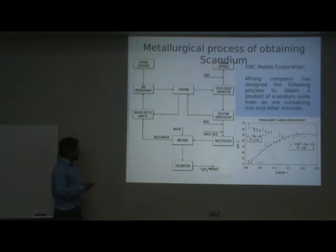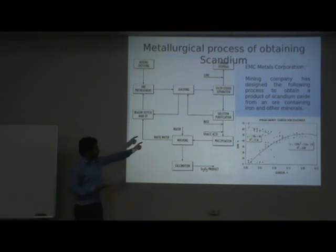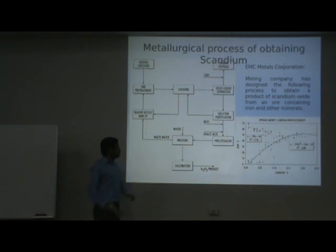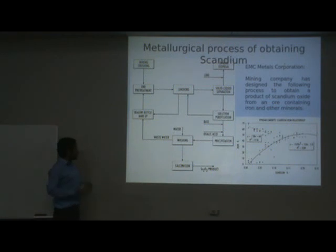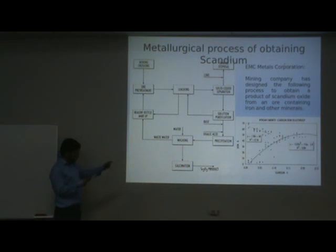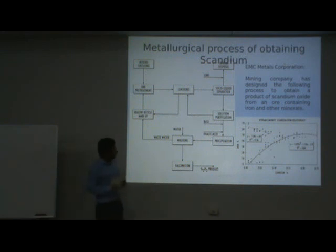After this, the pH is adjusted via ammonia, and the rich electrolyte is treated with oxalic acid to induce precipitation of scandium oxide. The scandium oxide precipitate is washed with water to remove residual salts. The process concludes with calcination, producing the final scandium oxide product.